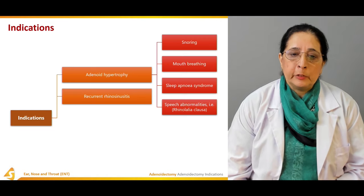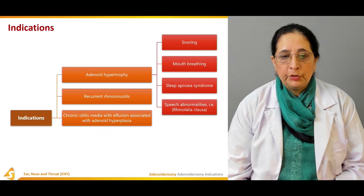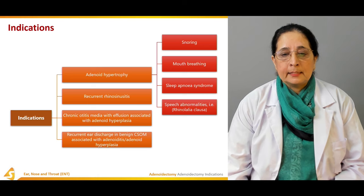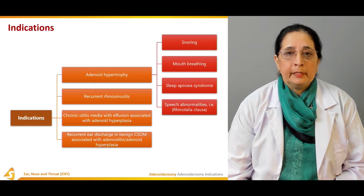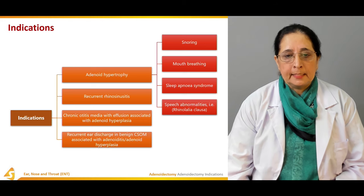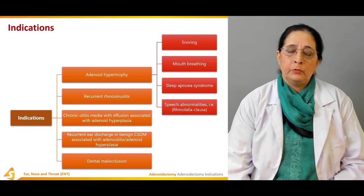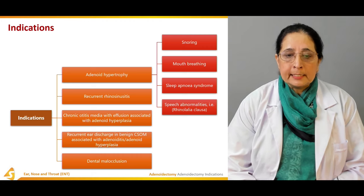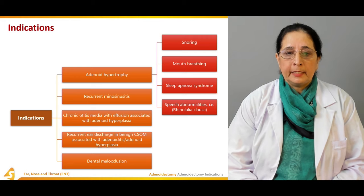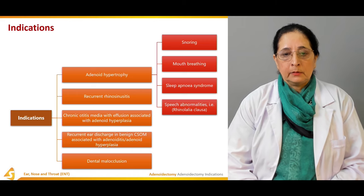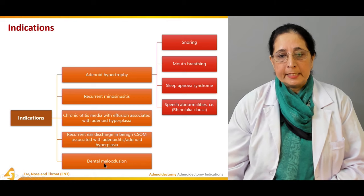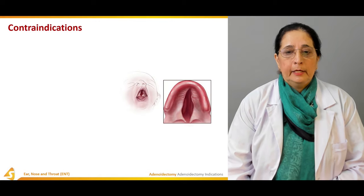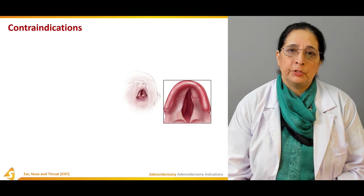Additional indications include recurrent rhinosinusitis, chronic otitis media with effusion associated with adenoid hyperplasia, recurrent ear discharge in benign CSOM associated with adenoiditis, adenoid hyperplasia, and dental malocclusion. So if there is recurrent infection, dental malocclusion, discharge from the ear, or chronic otitis media — all of these are indications that lead to adenoidectomy.